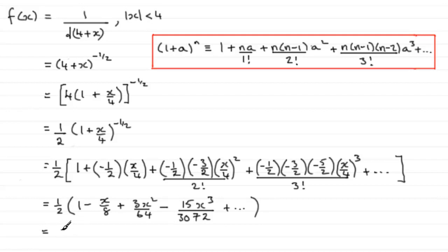Now we just multiply through with the half. If we do that we get a half, then minus x over 16, then plus 3x² over 256, and finally 5x³ over 2048, and still don't forget to write 'and so on'. Well there you go, there's the binomial expansion for f(x) up to the term in x cubed.